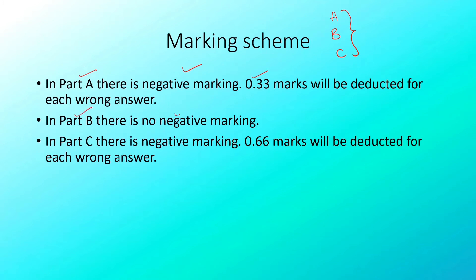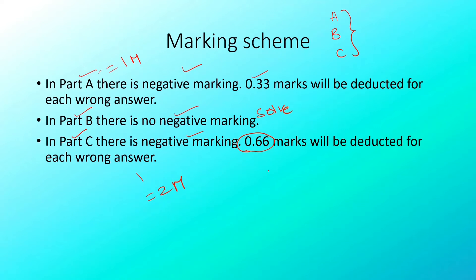In Part B, there is no negative marking. In Part C, there is negative marking — 0.66 marks are deducted per wrong answer. So you should be careful while answering Part C questions.